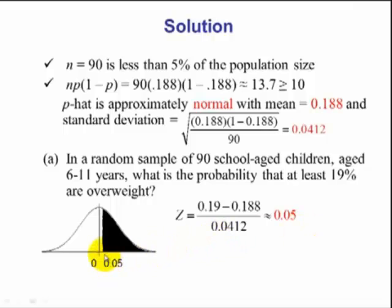Looking at the picture, our z-score 0.05, we want the probability of at least, and at least means greater than. Using table 5, the probability of z being greater than 0.05 is 1 minus what's in the table, 0.5199, which gives us a probability of 0.4801.